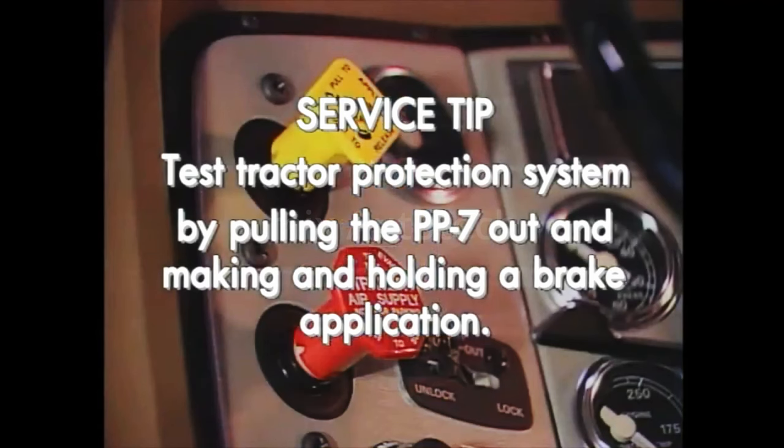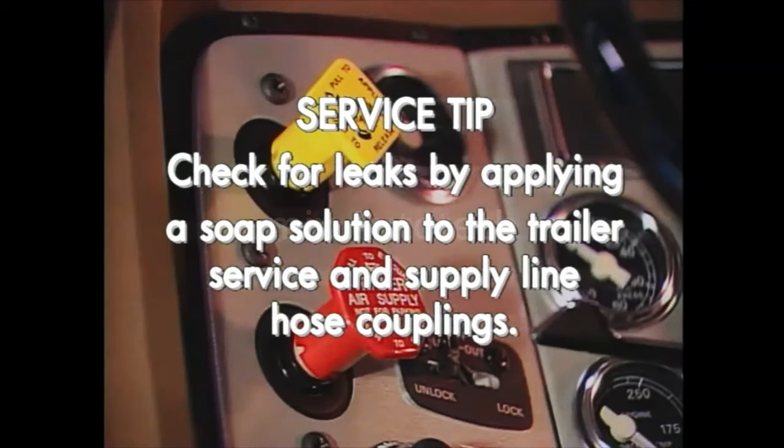Test the tractor protection system by pulling the PP7 out and making and holding a brake application. Apply a soap solution to the trailer service and supply line hose couplings to see if the TP3 or PP7 is leaking.